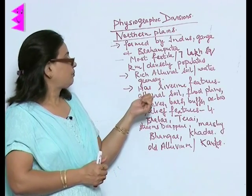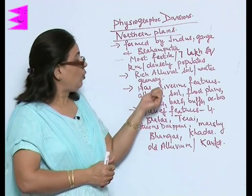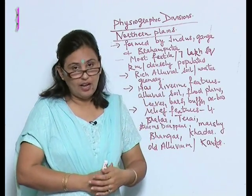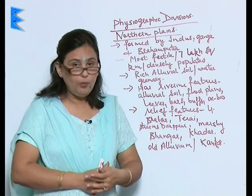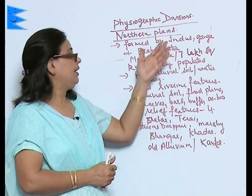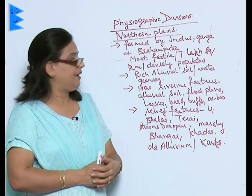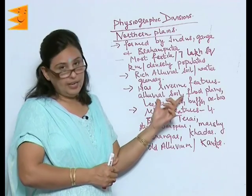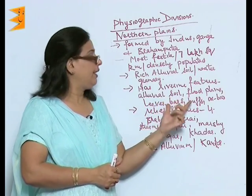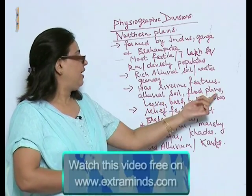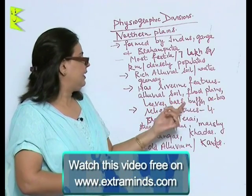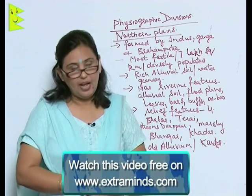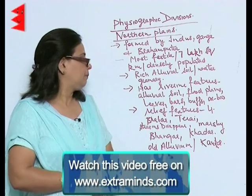So many riverine features are found in the Northern Plain — such as alluvium soil, flood plains, levees, bars, bluffs, and the oxbow lake.